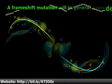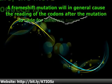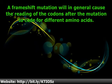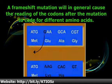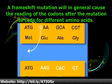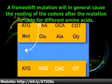A frameshift mutation will in general cause the reading of the codons after the mutation to code for different amino acids.